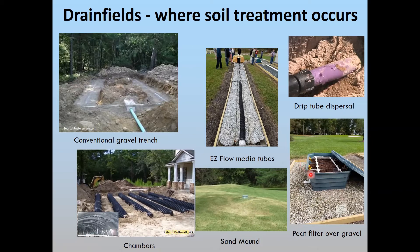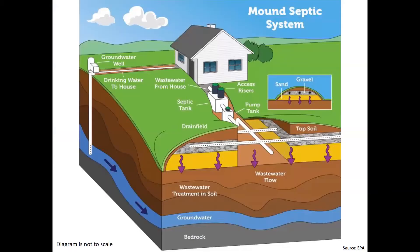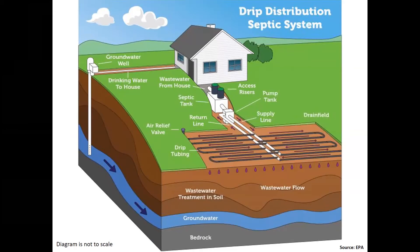The peat moss system is actually above ground, so that's a feature you'd have to take into account when landscaping. Here's another schematic of a sand mound system, which is basically elevated with specialized sand, some gravel, and corrugated pipe. It's covered with topsoil to allow for different types of vegetative growth.